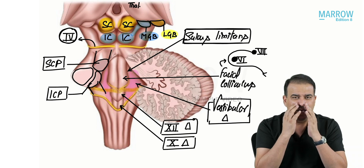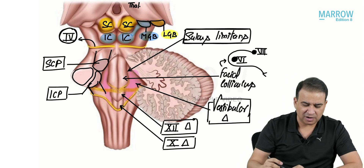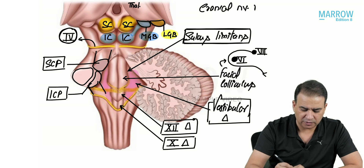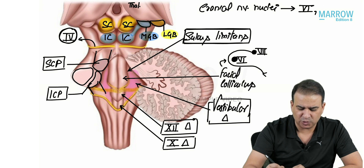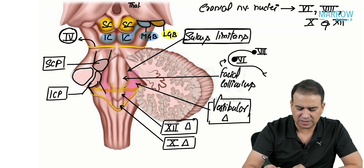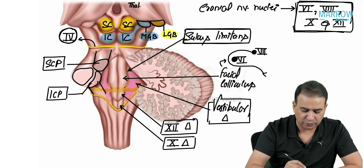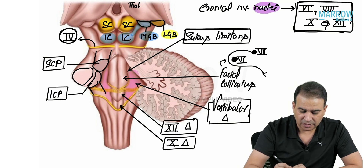If the question asks which cranial nerve nuclei are present in the floor of the fourth ventricle, the answer is: sixth nucleus, eighth nucleus (vestibular), tenth, and twelfth — written in sequence: 6, 8, 10, and 12. Please be careful though — this is about the nuclei present there.